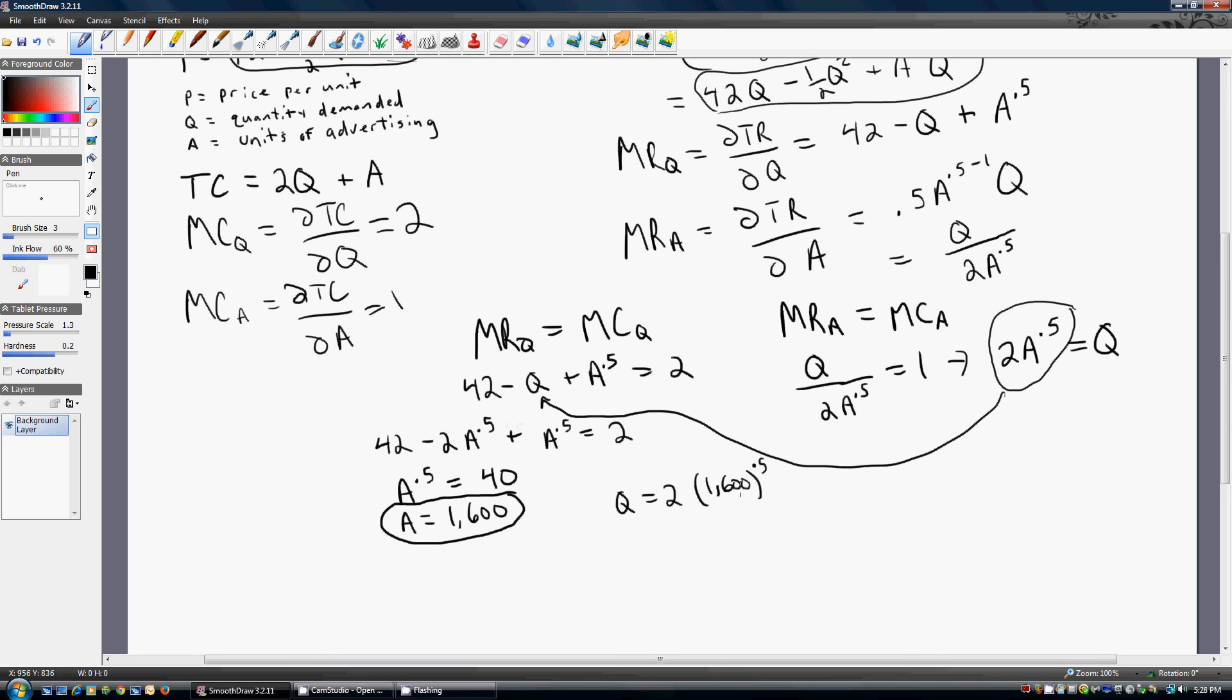We'll see that Q equals 80. Square root of 1,600 is 40 times 2 is 80.